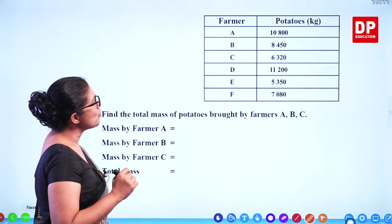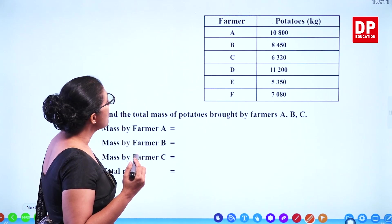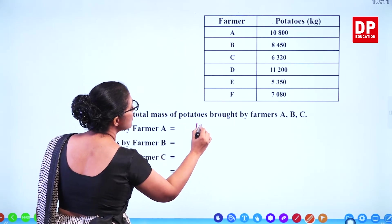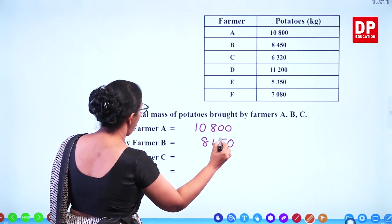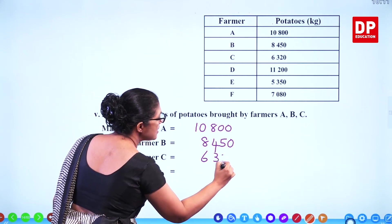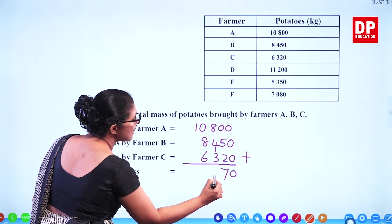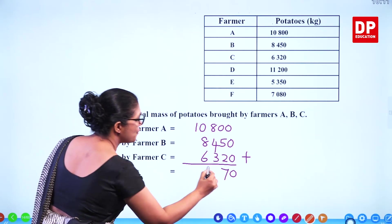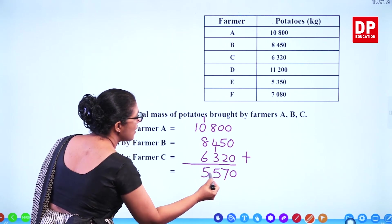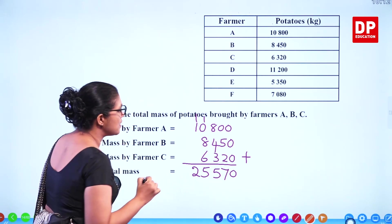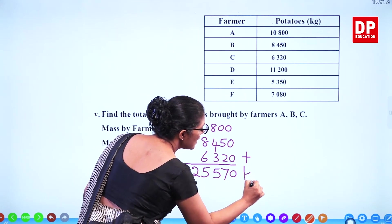Find the total mass of potatoes brought by farmers A, B, and C. Farmer A is 10,800, farmer B is 8,450, and farmer C is 6,320. Adding: 0, 5 plus 2 is 7, 8 plus 4 plus 3 is 15 carry 1, 8 plus 1 plus 6 plus 1 is 16 carry 1, giving 25. So the total mass is 25,570 kilograms.